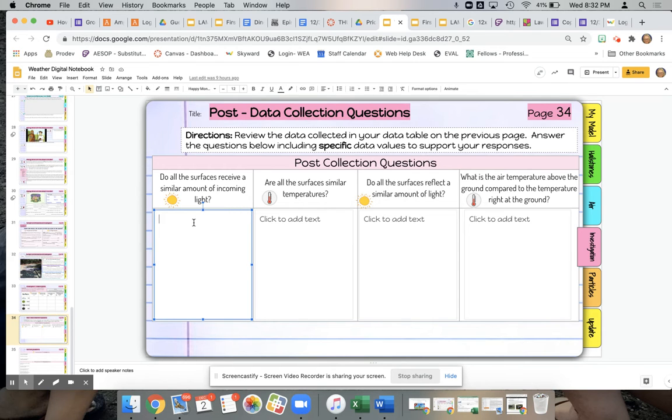So then I would come back to the notebook and add that. So I might say the grass, dirt, and cement received similar amounts of light with flux values in the 500 range.